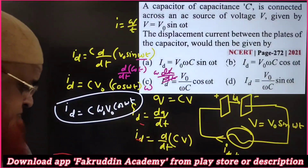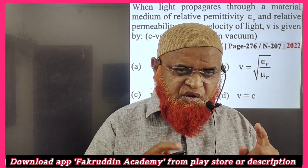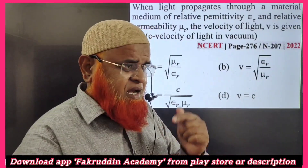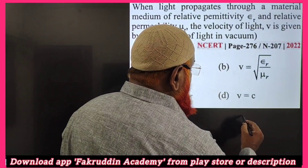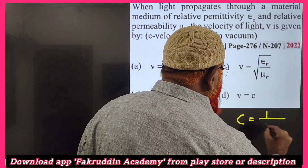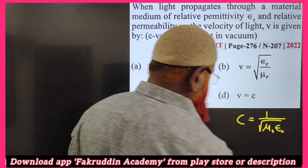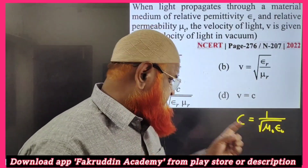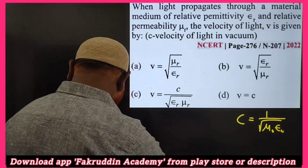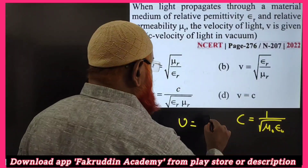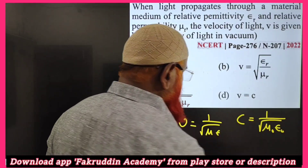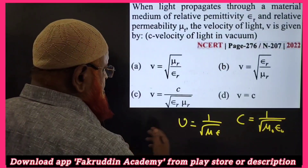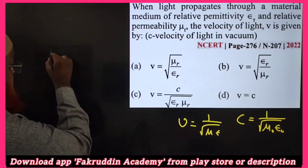Welcome to the one-minute series on electromagnetic waves. This question was asked in 2022 NEET. The velocity of light in free space is c = 1/√(μ₀ε₀), where μ₀ is permeability and ε₀ is permittivity of free space. The velocity of light in a medium is v = 1/√(με), where μ and ε are for the medium.